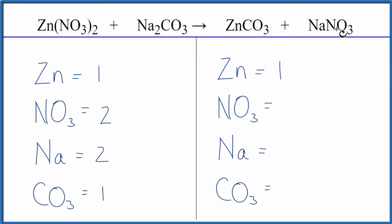On the product side I have one zinc, one nitrate, one sodium, and one carbonate. By doing this I can see right away what I need to do to balance the equation. I have one nitrate here, two here, one sodium here, two here.